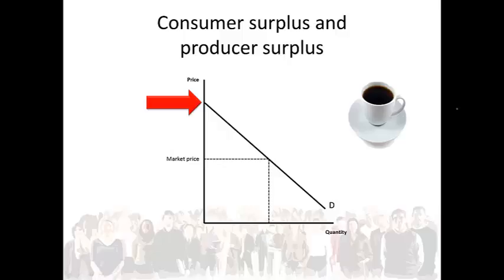As the price becomes lower, the quantity of coffee demanded increases. This is due to the downward sloping nature of the demand curve.